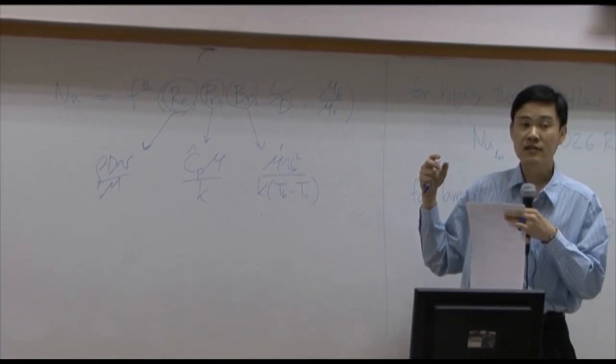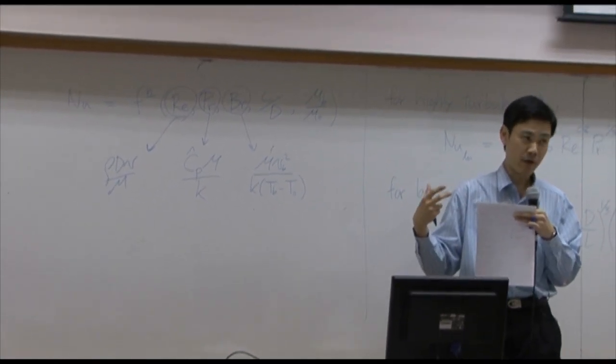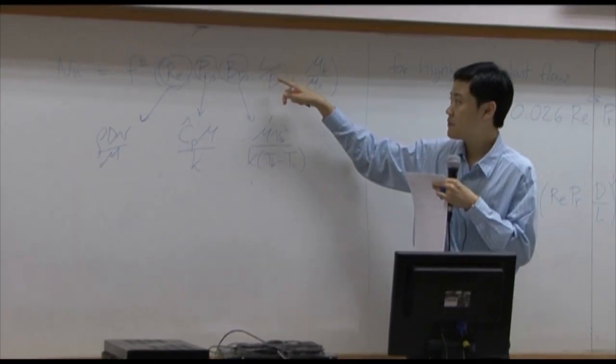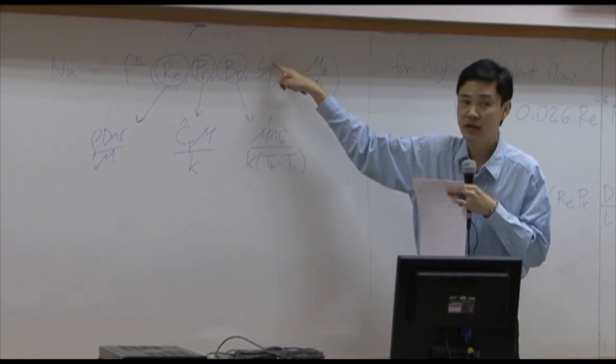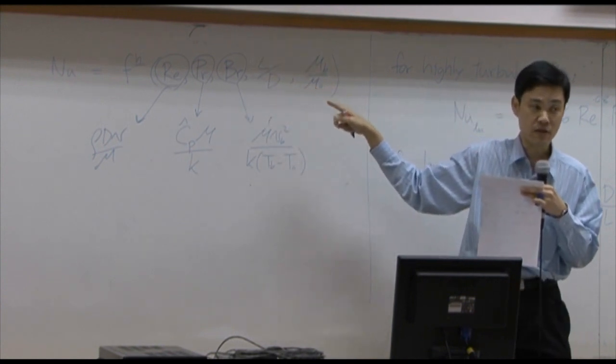In some flow in closed conduits, it may be a function of length over diameter. This is another dimensionless number representing the system.